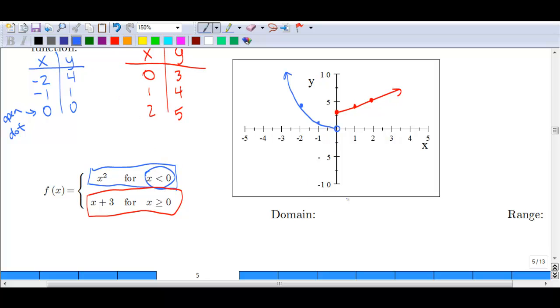In this case, our domain is all real numbers. So we can either write that with the brackets and say all reals. Or we can write it with the set notation and say that x is included from negative infinity to infinity. And again, that includes all of our numbers.